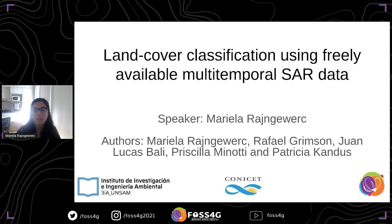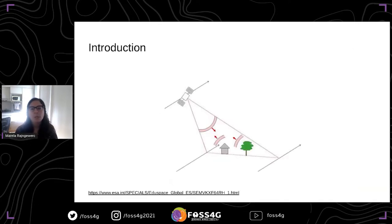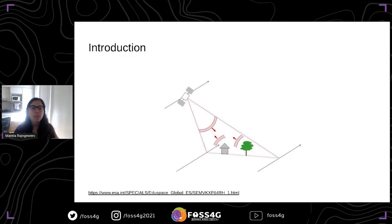First, I wanted to tell you a little bit about how SAR — synthetic aperture radars — work. These are radar systems that usually go on aircraft or spacecraft. They generate images by sending an electromagnetic wave that interacts with the Earth's surface, and after interacting, a portion of this wave returns to the sensor, which captures this echo. These are active systems, meaning they do not need external sources to get information.